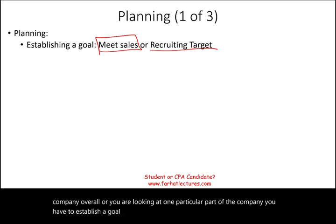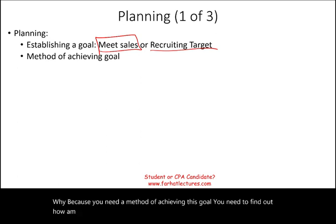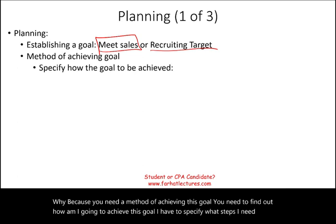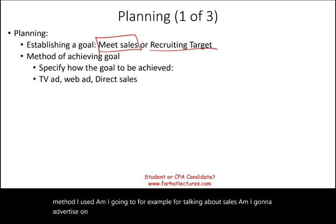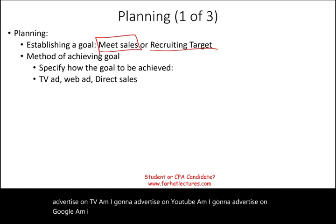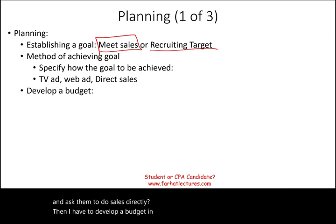Managerial accounting will help in this process because you need a method of achieving that goal. You need to find out how you're going to achieve it — what steps and methods you need. For example, if we're talking about sales: are you going to advertise on TV, YouTube, Google, Facebook? Are you going to hire people to do direct sales? Then you have to develop a budget, and managerial accountants are involved in this step.